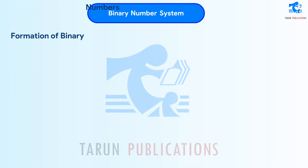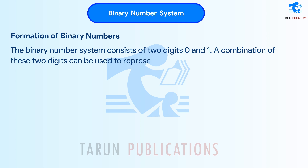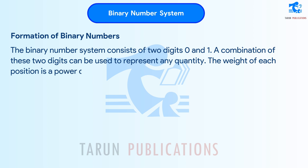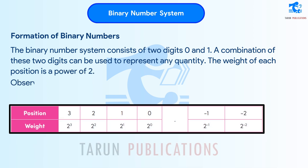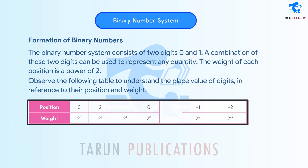Formation of binary numbers. The binary number system consists of two digits, 0 and 1. A combination of these two digits can be used to represent any quantity. The weight of each position is a power of 2. Observe the following table to understand the place value of digits in reference to their position and weight.